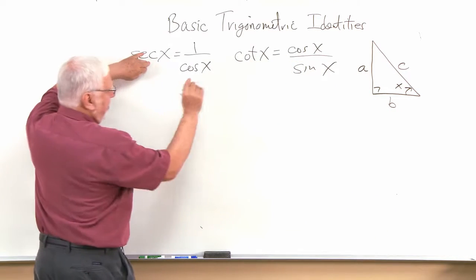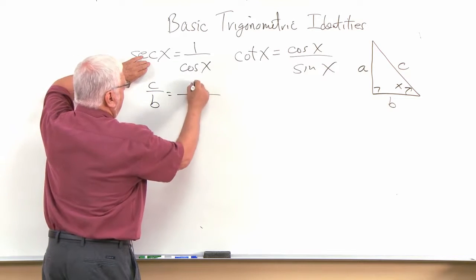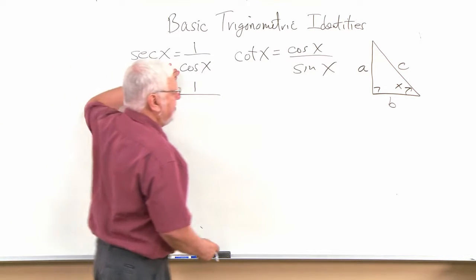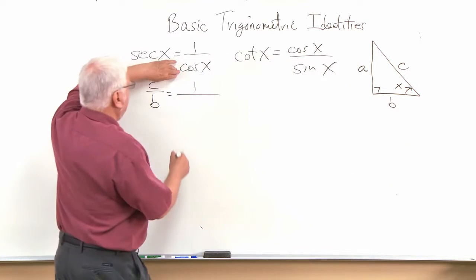So we could translate that according to our picture, c over b. And now the cosine of x, what's that? It's the adjacent over the hypotenuse. So that's b over c.